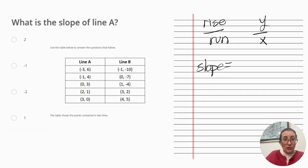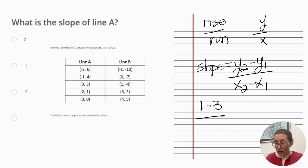Slope equals y2 minus y1 over x2 minus x1. Taking any two data points, 1 minus 3 over 2 minus 0,